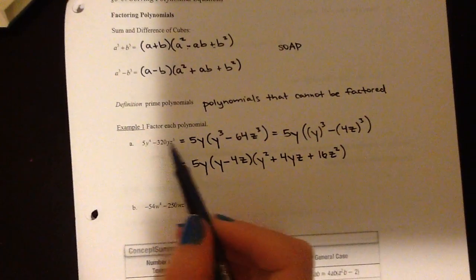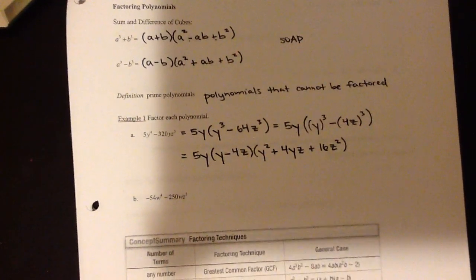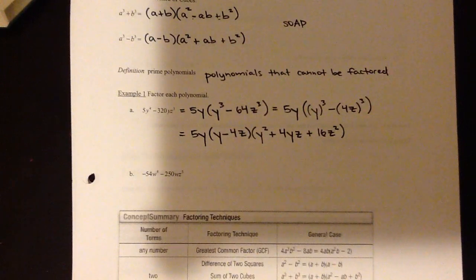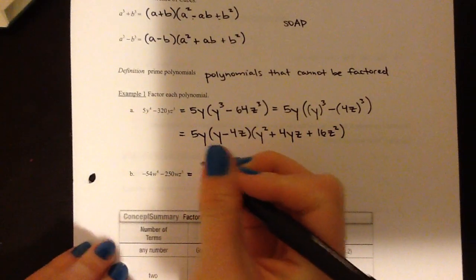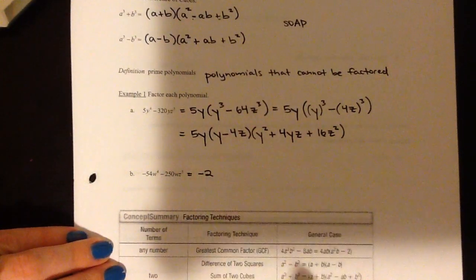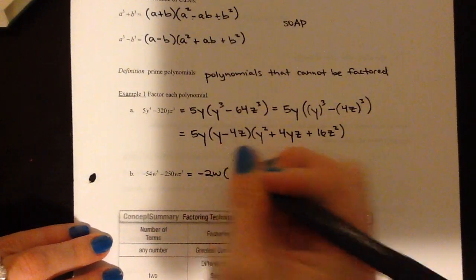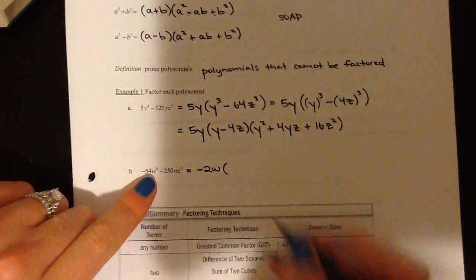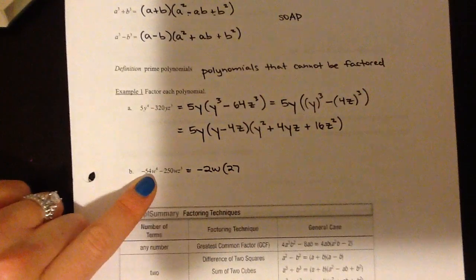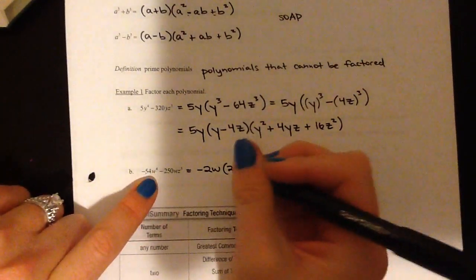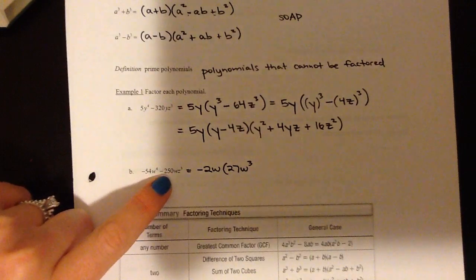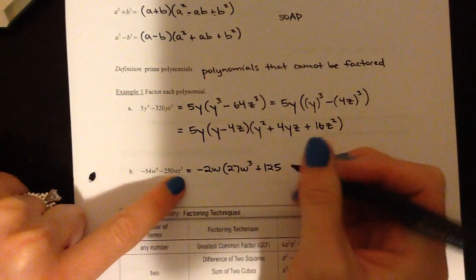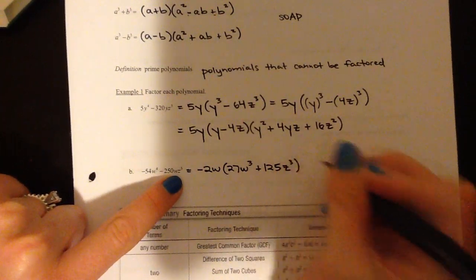We would use that for solving, which we'll get to in just a couple of problems. For this next one we're going to do the same thing — start with the GCF. The GCF we can take out is actually just a 2; they both have a 2 in common. Let's take out a negative 2 to make things a little bit cleaner, and notice that both of them have a w. So in parentheses, when we factor out negative 2: negative 54 divided by negative 2 leaves positive 27, and removing one factor of w leaves w cubed. When factoring out negative 2 from negative 250, I'm left with positive 125, and with the w factored out, I still have 3 factors of z.